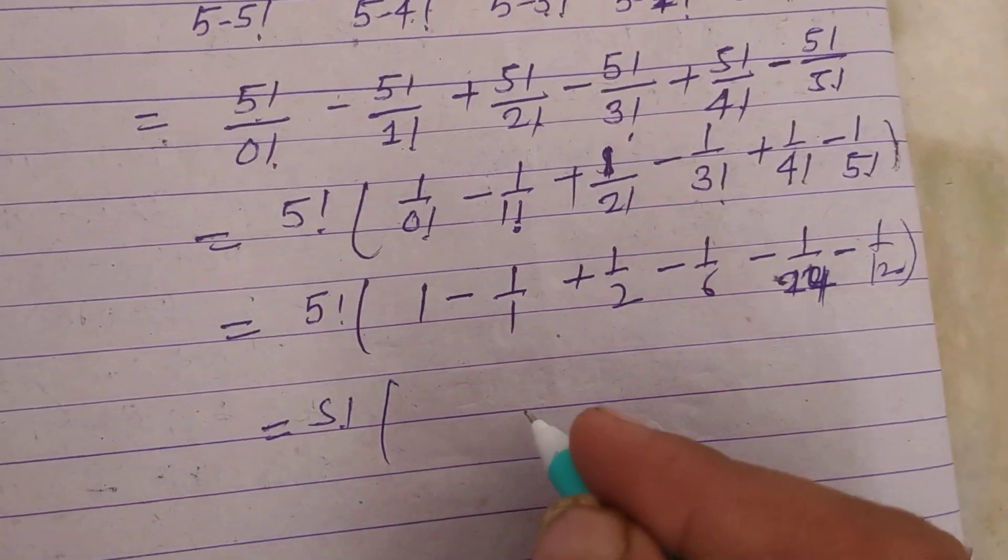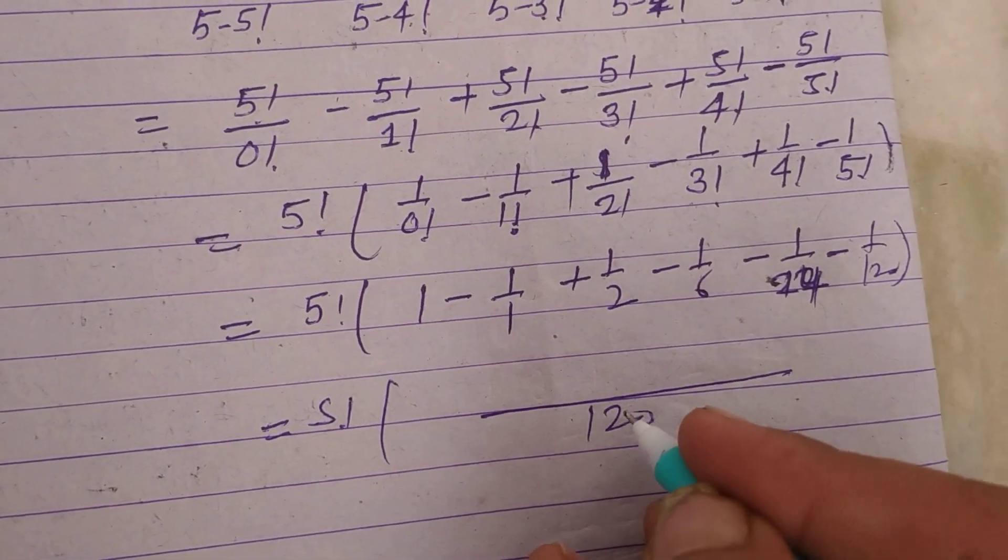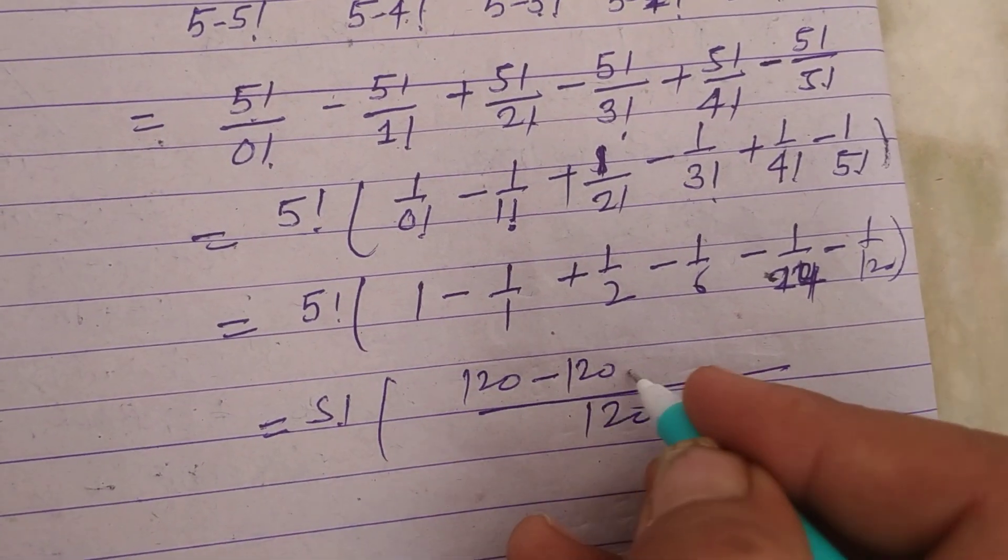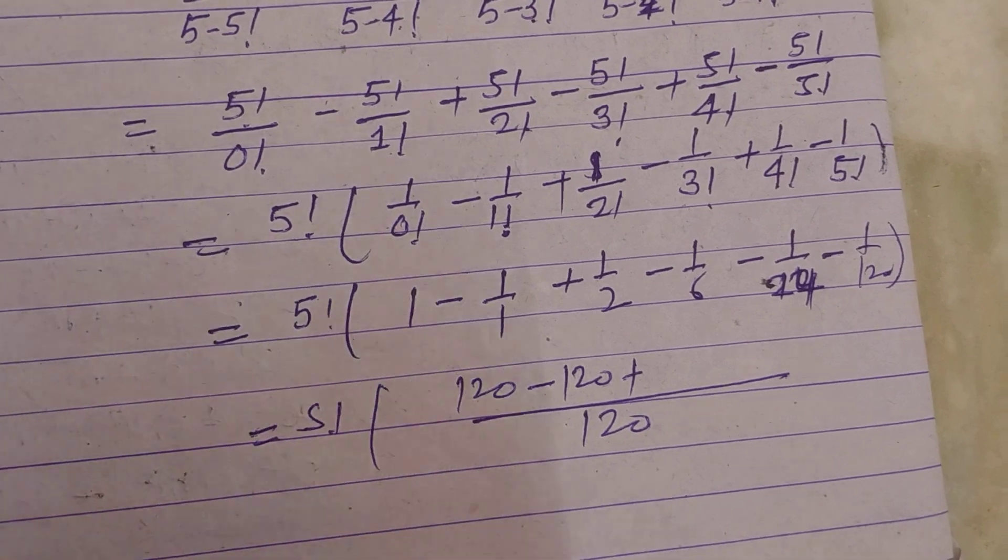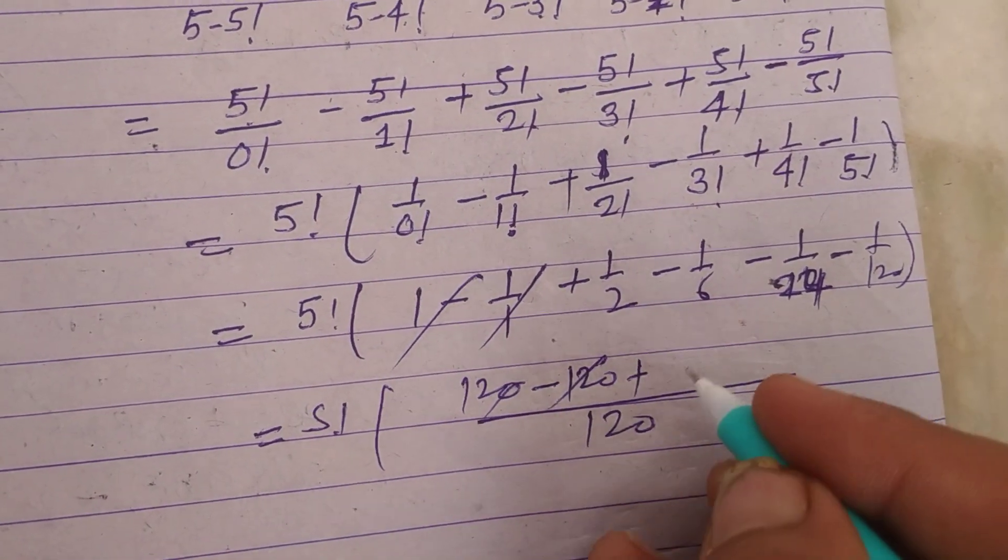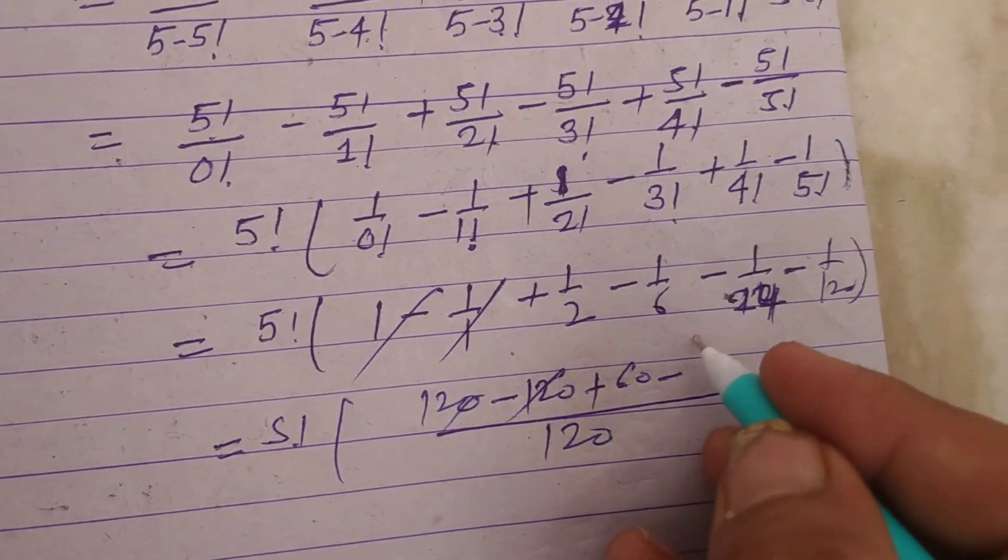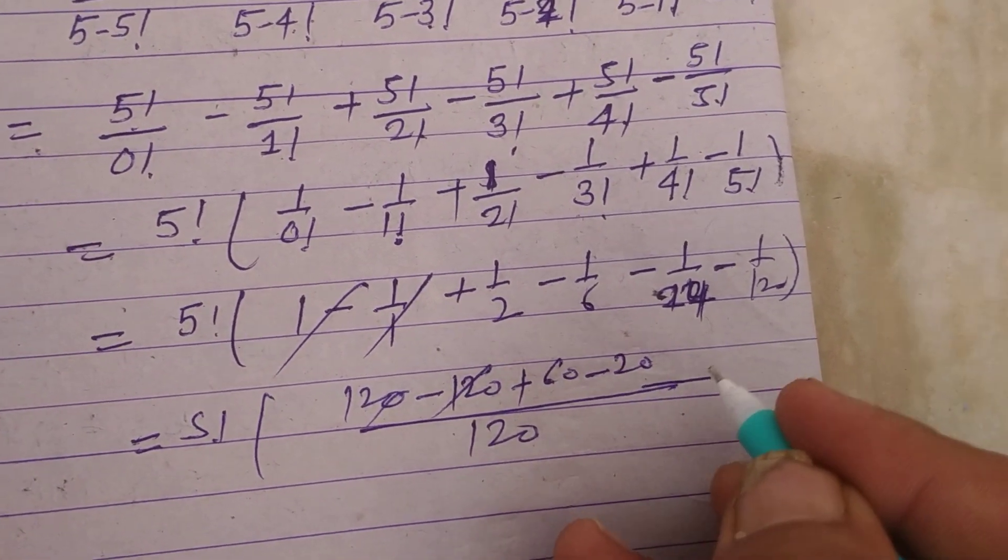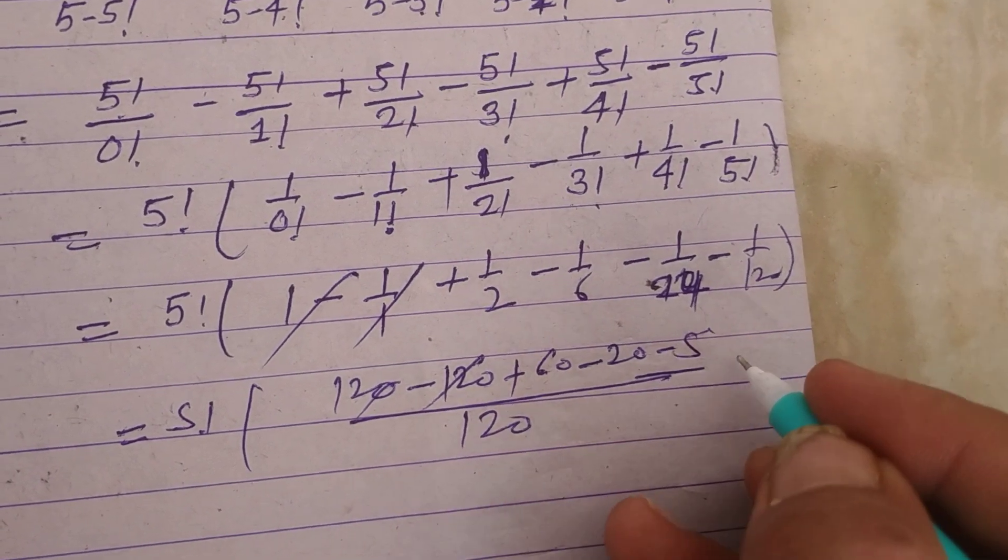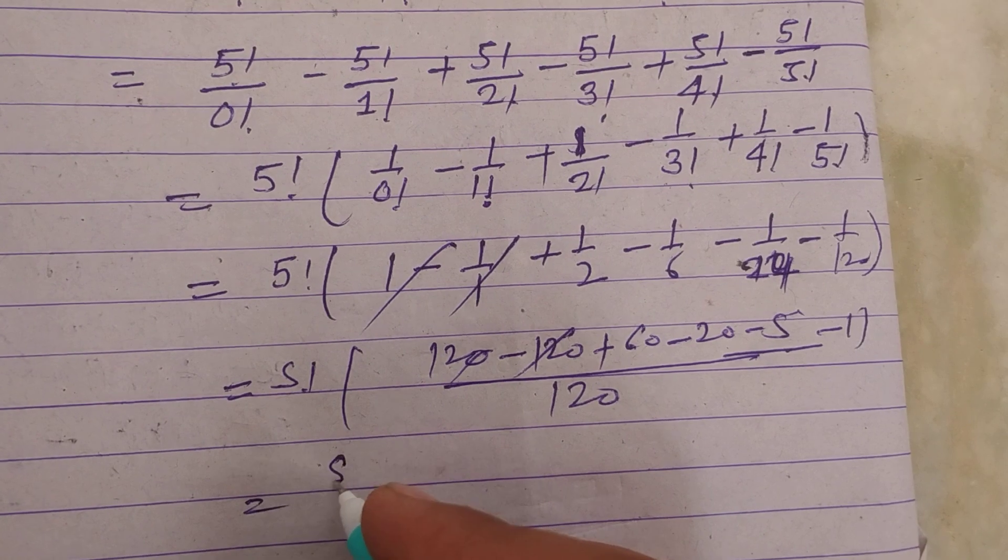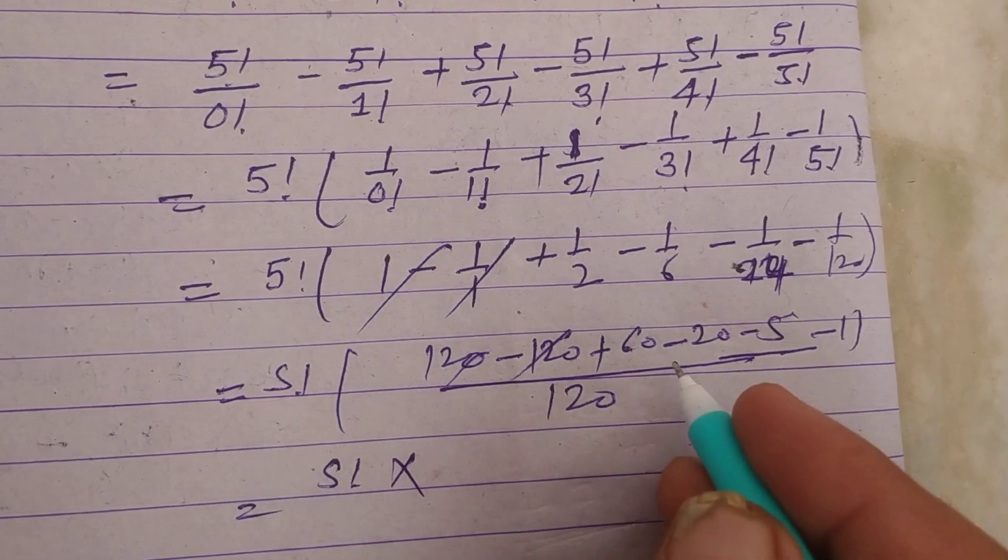Now solving it, 5! is 120. So this is 120 minus 120, which cancels out. Then we have 60 minus (60/2 = 30) minus (120/6 = 20) minus 5 minus 1. So 5! times 60.